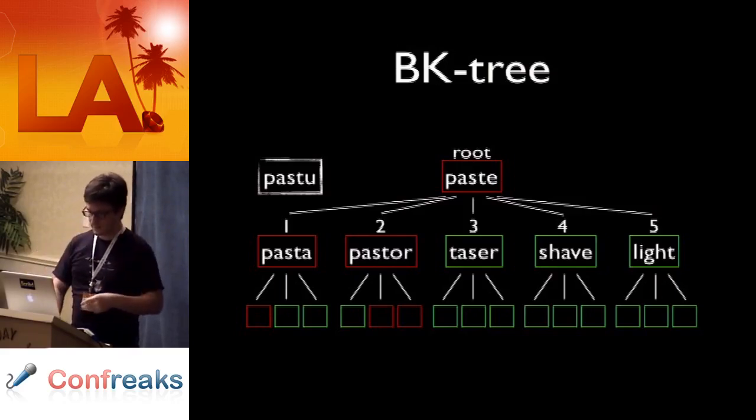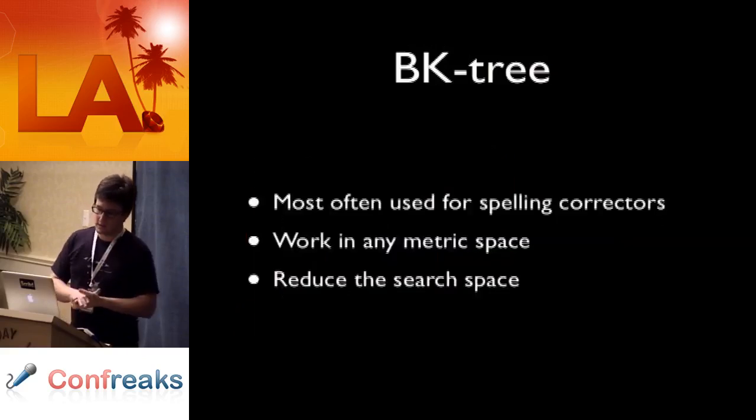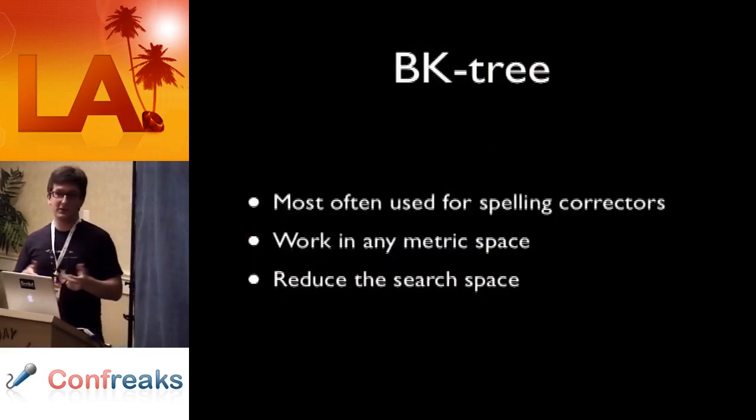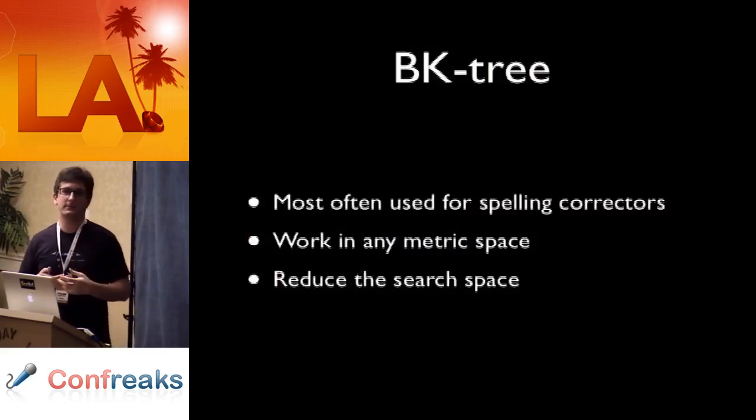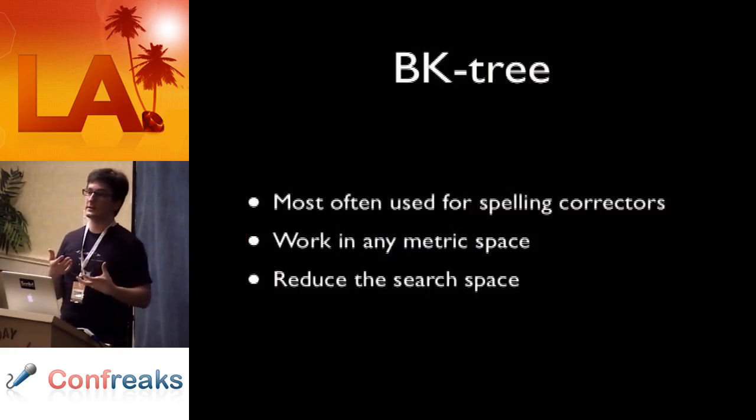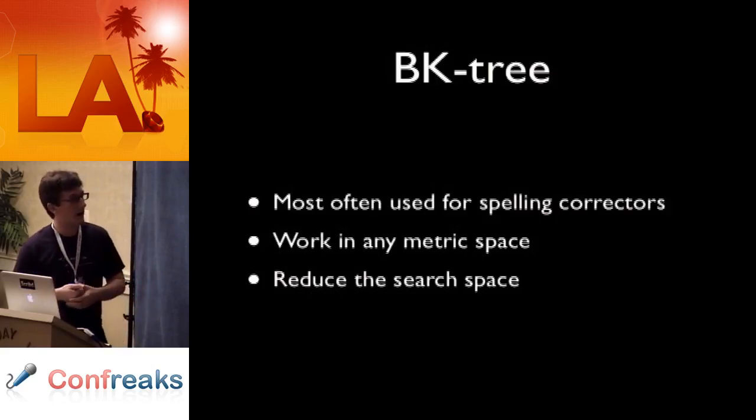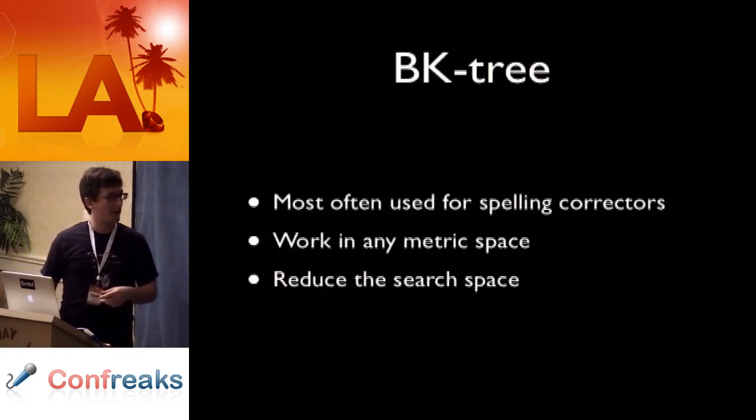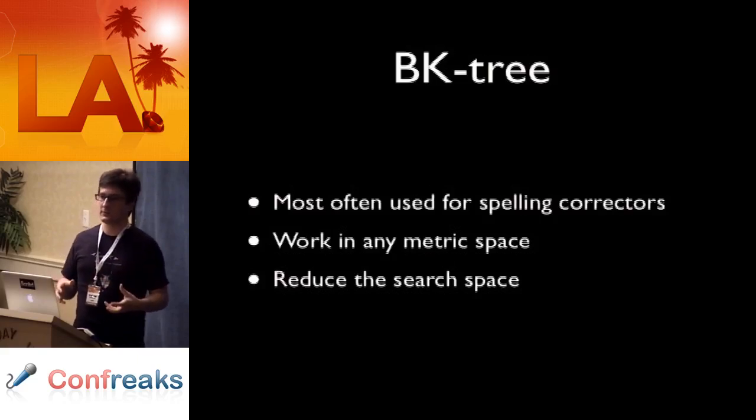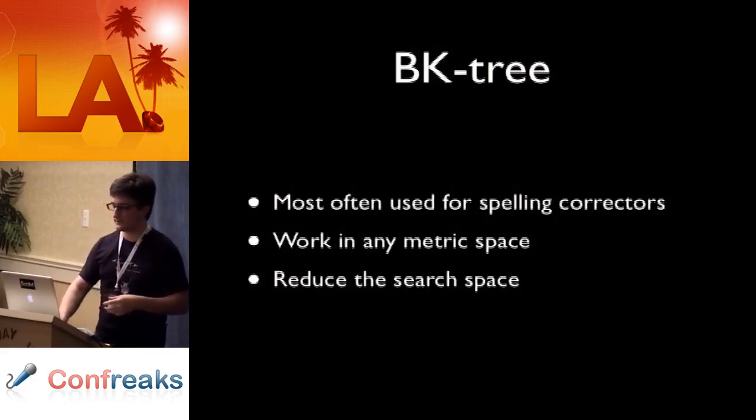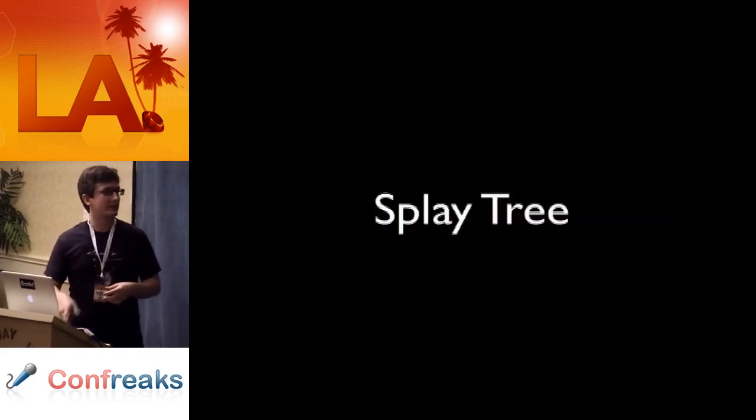Summing up BK trees, most often these are used for spelling correctors, but you could also use a BK tree for something like finding everything that's particularly close to something on a map, for instance. It works in any metric space, but it only works in metric spaces, and the point is to reduce the search space to reduce the number of functions that you have to run. That about covers it for BK trees, so let's move on to another one. It's called a splay tree.